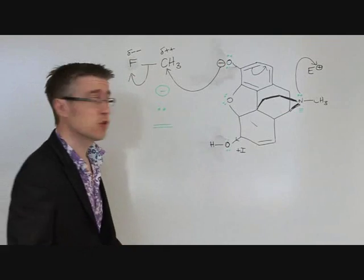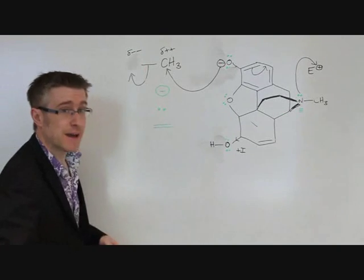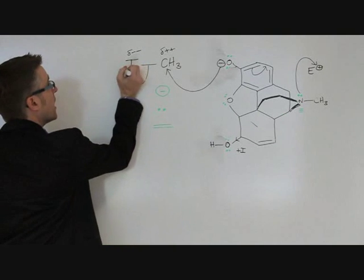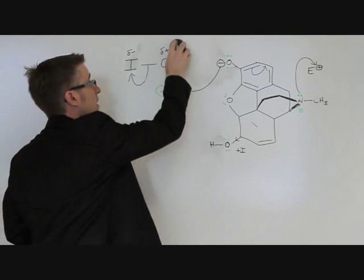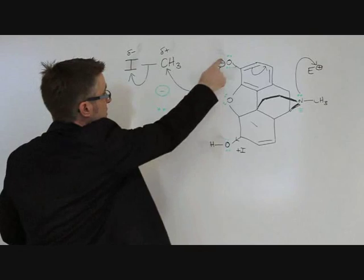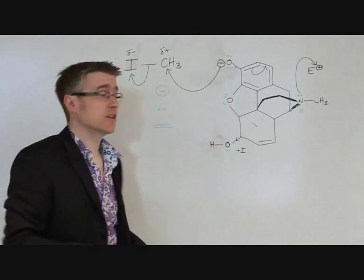So instead of using a fluoride here, it's better to use an iodide group. Although that makes it less delta minus and less delta plus, which will slightly slow down the attack of the nucleophile,